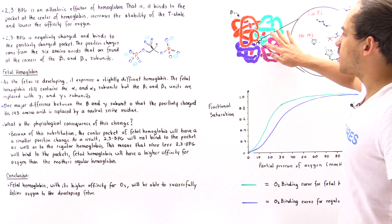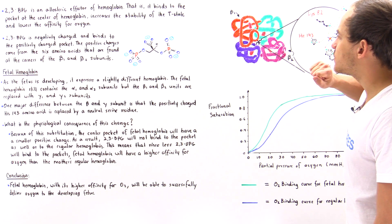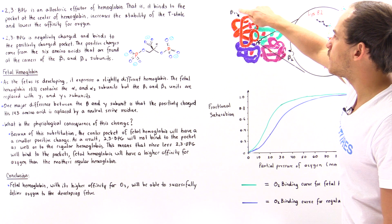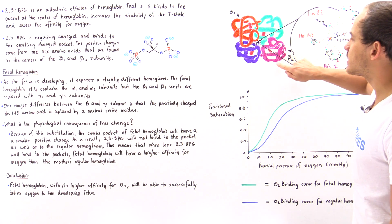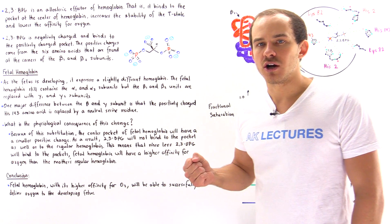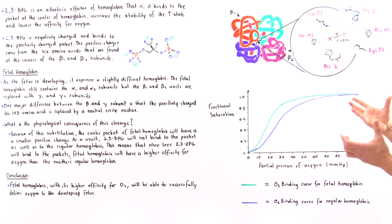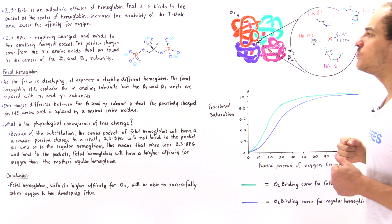At the center of the actual hemoglobin molecule is this pocket of space. We have three amino acids coming from the beta-1 subunit: histidine-143, lysine-82, and histidine-2. We also have three amino acids coming from the beta-2: histidine-2, lysine-82, and histidine-143. Each one of these amino acids contains sidechain groups which contain a positive charge. Together, these six amino acids create a relatively large positive charge at the center of that hemoglobin.